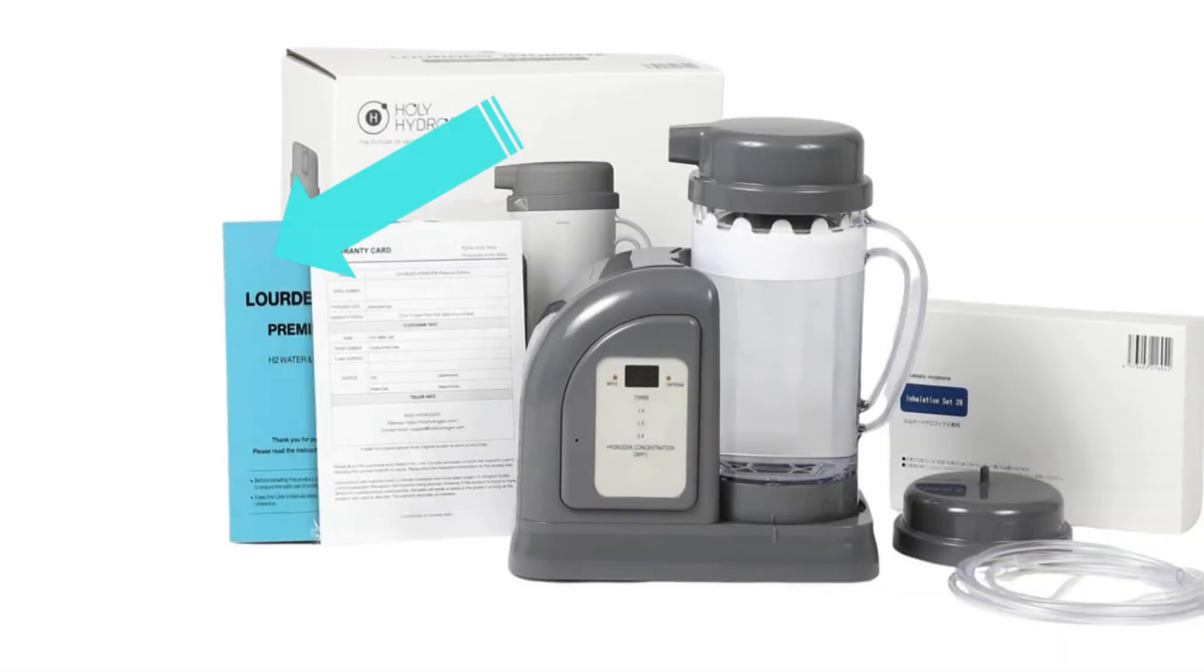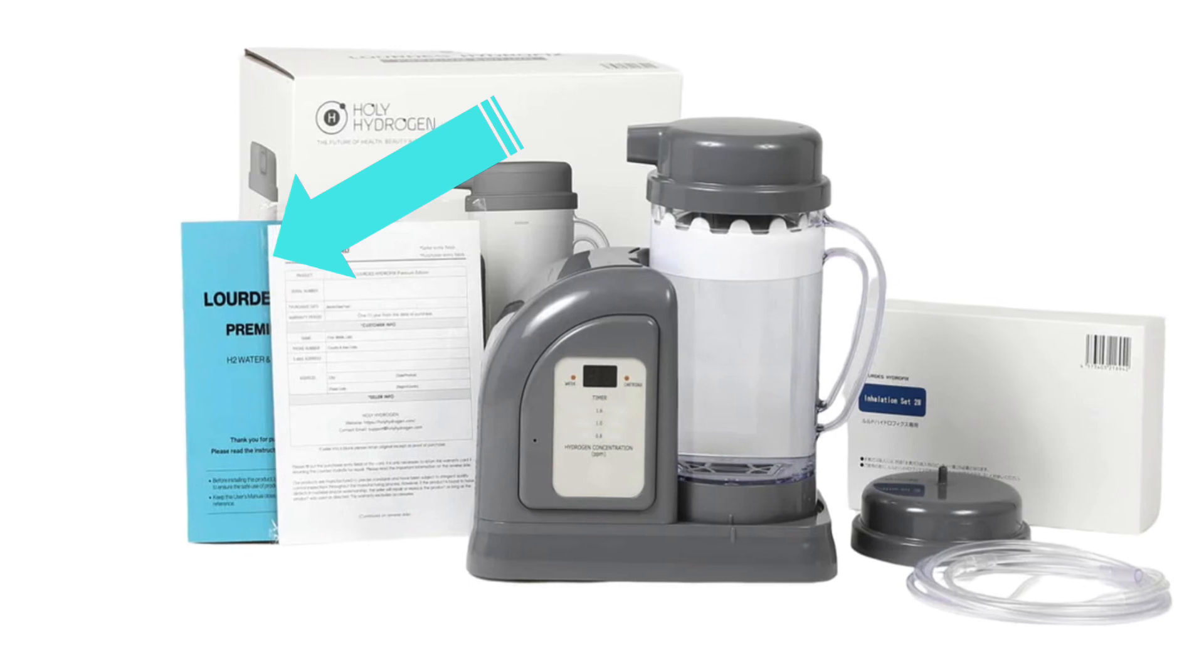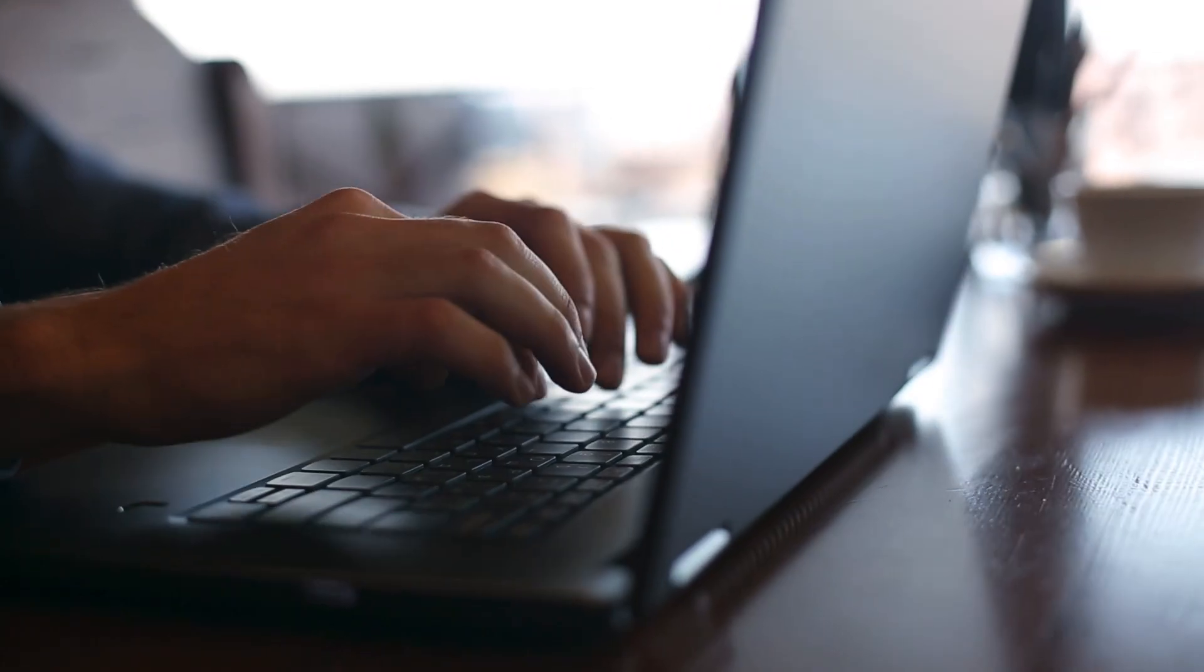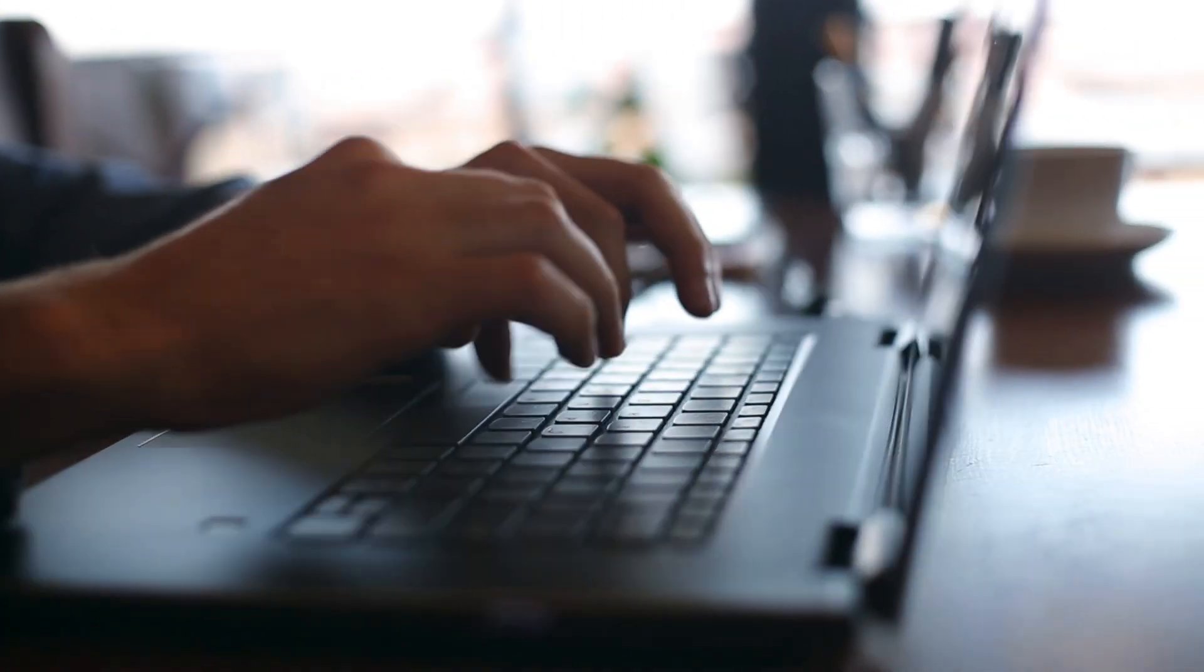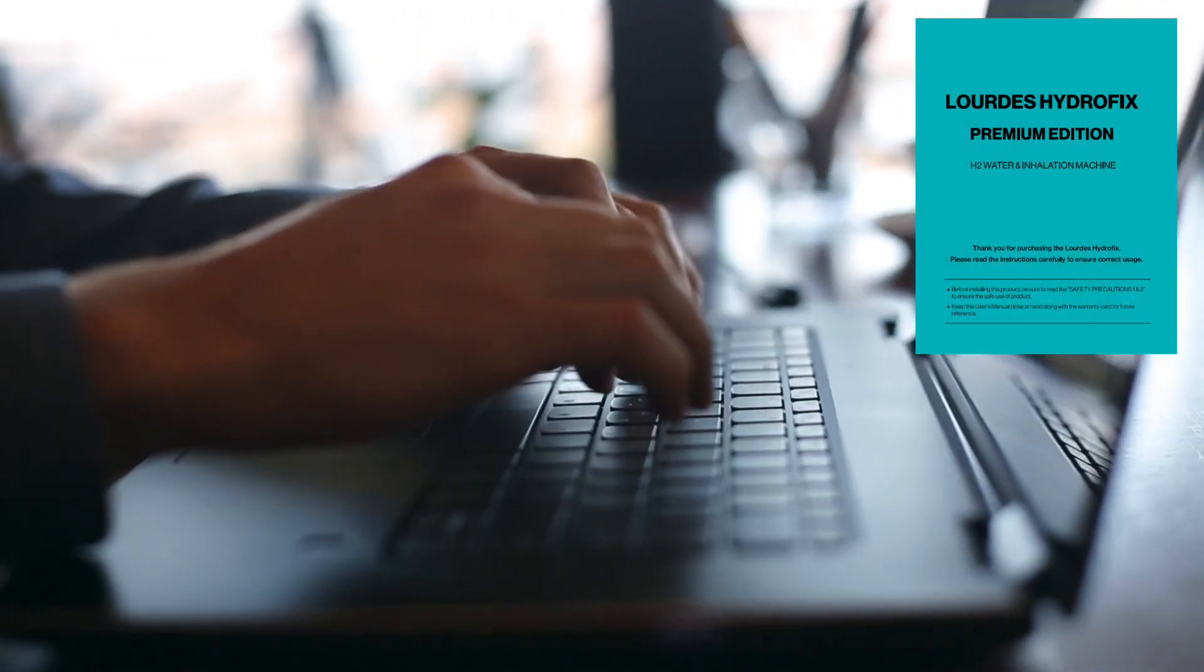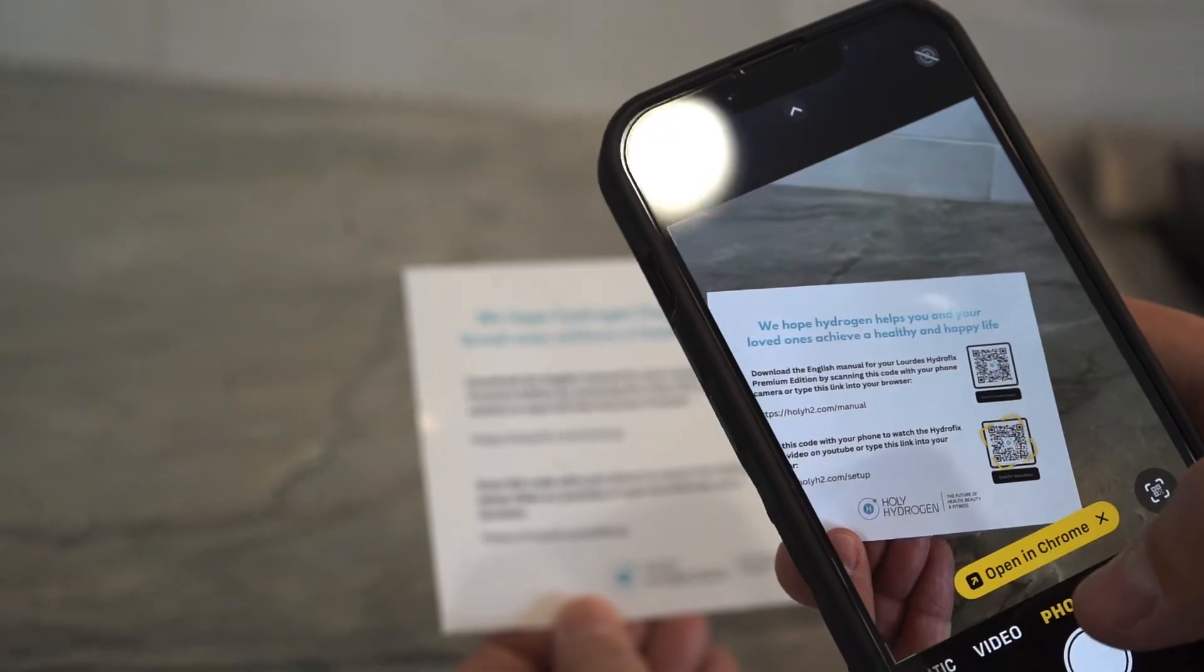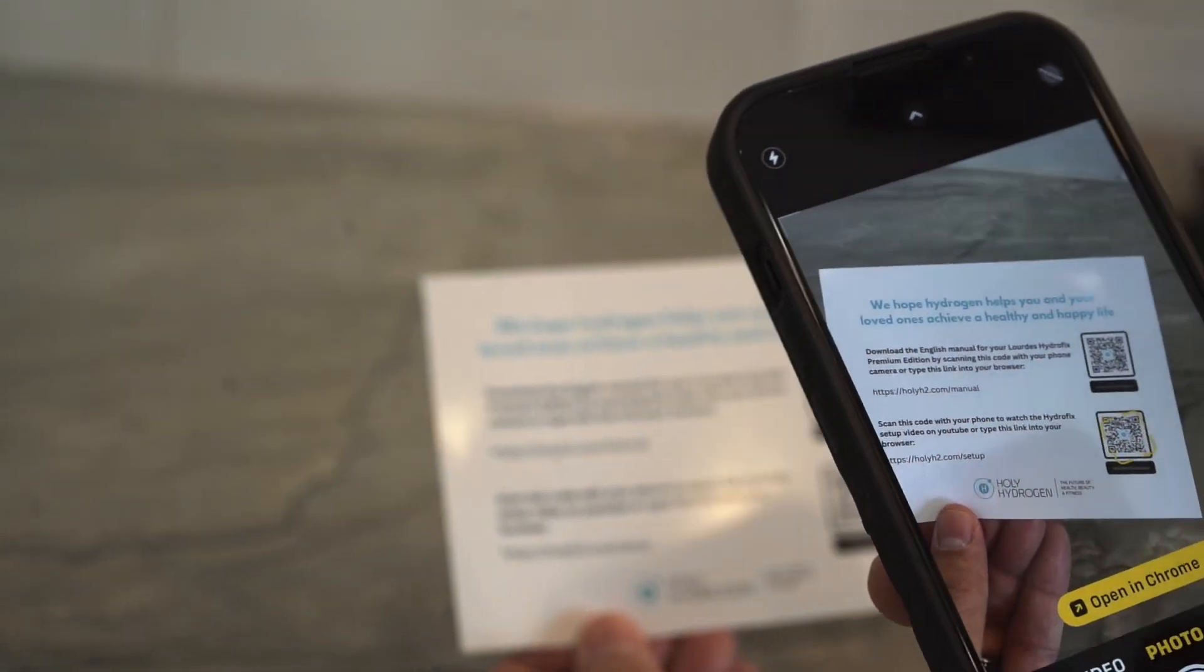Also as a reminder, each unit comes with a manual, certificate of authenticity and testing, and finally your warranty card. In addition to the physical manual, please look for a digital user's manual through email, which you can print in the convenience of your own home, or you can scan the QR code in the included insert.